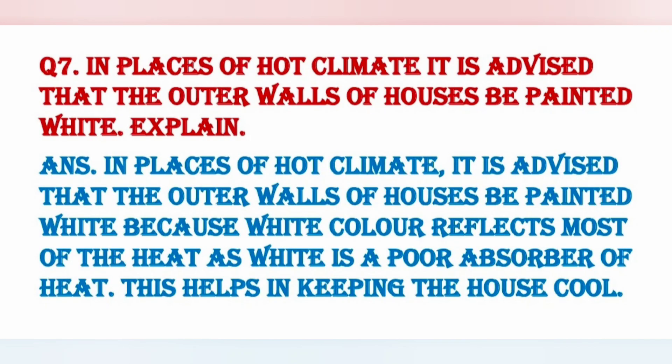Next question: in places of hot climate, it is advised that the outer walls of houses be painted white — explain. ऐसी जगहें जहाँ पर बहुत ज़्यादा गर्मी होती है, वहाँ घरों को white paint कराने की सलाह इसलिए दी जाती है क्योंकि white paint ज़्यादातर heat को reflect कर देता है और bad absorber होता है heat का. इससे house को cool रखने में help होती है.